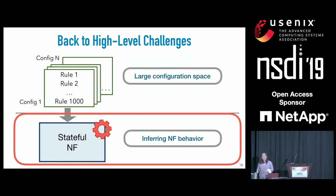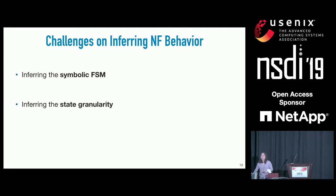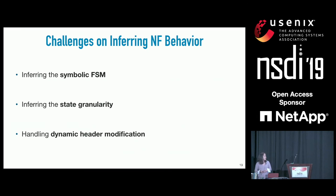Now let's look at how we can infer NF behavior. There are three sub-challenges. First, we need to infer the symbolic FSM. Second, we need to infer the state granularity—NFs can keep per-connection, per-source, per-destination, or cross-connection state, and the type affects how we instantiate the ensemble. Lastly, we need to handle dynamic header modification. In this talk, I'll focus on the first two.